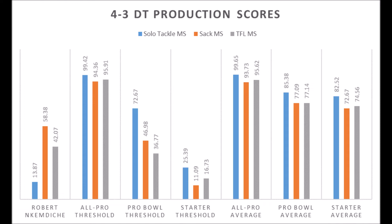Essentially, the Cardinals drafted a defensive tackle who scored at a production level where there has never been a long-term starter in any round. When you compare his scores against the all-pro average, pro bowl average, and starter average, he is nowhere near the starter averages on any of his production points — which starts to raise serious questions.